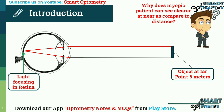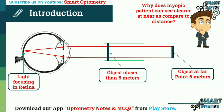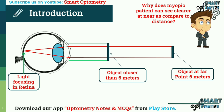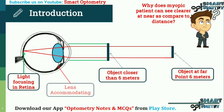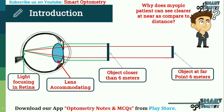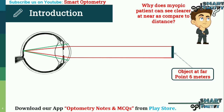If the object is closer than six meters, our eyes need more converging power to focus the rays on the retina. This is done by changing the shape of the crystalline lens, which is called accommodation of the eyes.